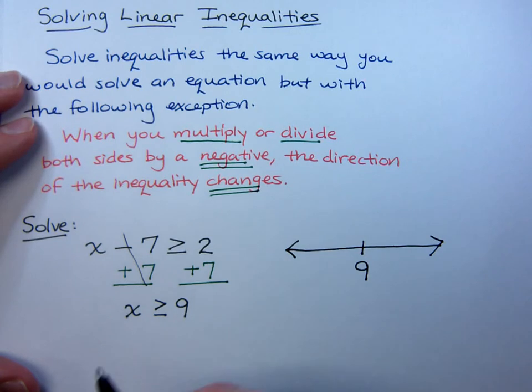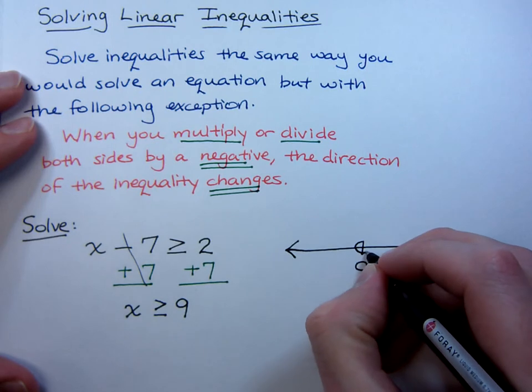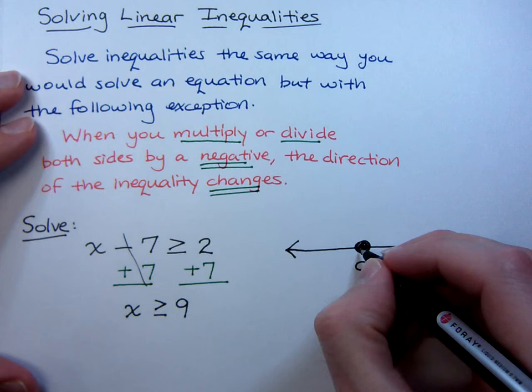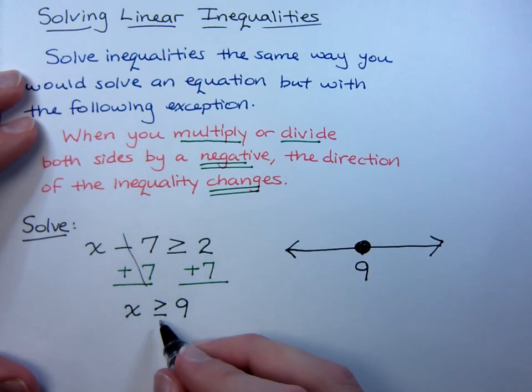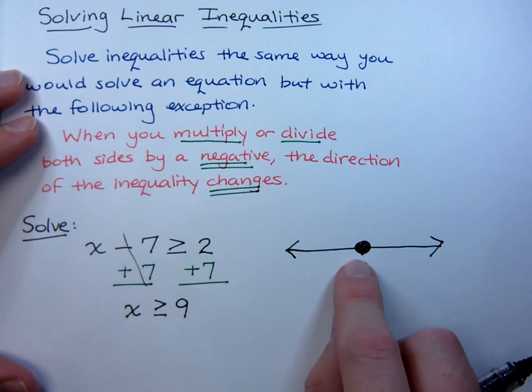Now, since this says greater than or equal to, I'm going to have a closed circle. And the reason it's going to be closed is because of the equal to. The equal to is going to give you a closed circle. Had it just been greater than, like this, it would have been an open circle. But since I've got the equal to part, it's going to make it closed.